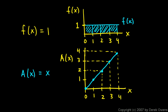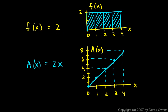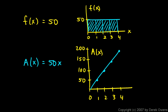So f of x is equal to 1, right there, and the antiderivative of that is x. And in the second example we did, the function was 2, and the antiderivative was 2x. And in the third example that we did, the function was 50, and you see the antiderivative of that is 50x.